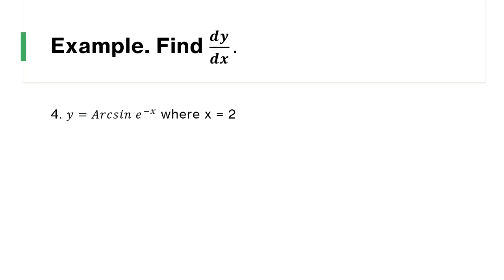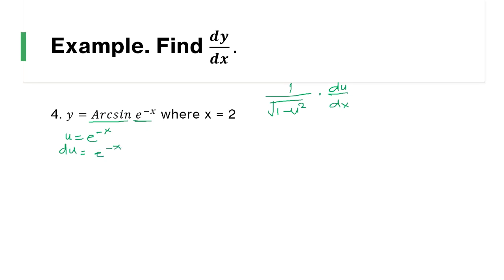The last example: y = arcsin(e^(-x)), where x = 2. Since x has a given value, our result will be a constant. The derivative of arcsin is 1 over the square root of (1 - u²), times du/dx. Here u = e^(-x), and du/dx = e^(-x) · (-1) = -e^(-x).